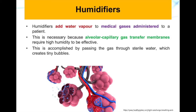This is an important function — we need to make sure that patients are receiving humidified gas to avoid damage. This is necessary because the alveolar capillary gas transfer membranes require high humidity to be effective. Humidity can range in the upper tract from 50 percent, going deeper into the lungs up to 80 or 90 percent humidity.